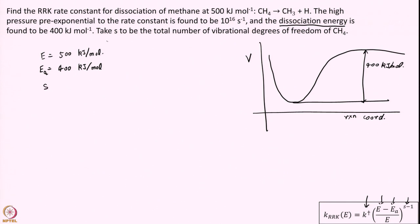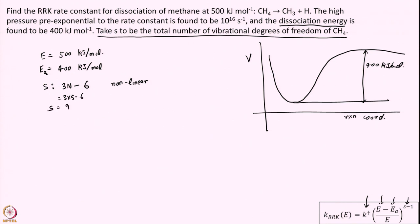Now let us look at S. For this problem we take S to be the total number of vibrational degrees of freedom of CH4. Vibrational degrees of freedom = 3N − 6 for a non-linear molecule; methane is non-linear with N = 5 atoms (4 hydrogens + 1 carbon). Note: for a good experimental answer, S is usually smaller than the total vibrational degrees of freedom — S is somewhat ad hoc in RRK theory and that is a limitation.